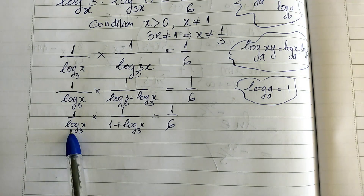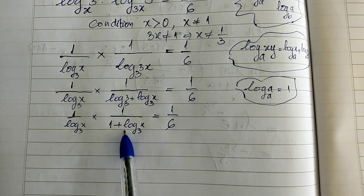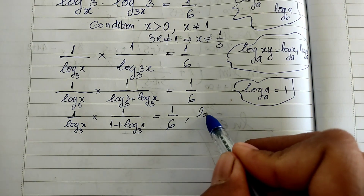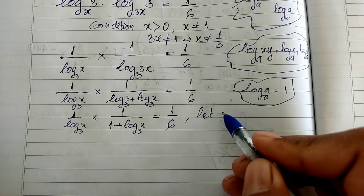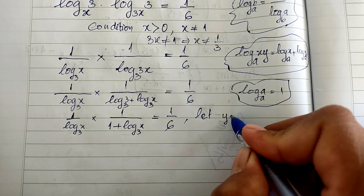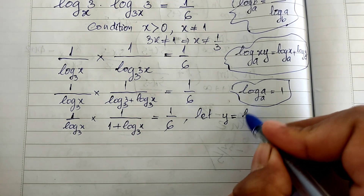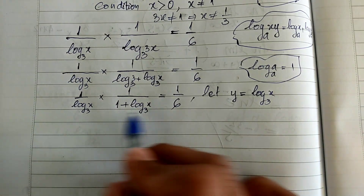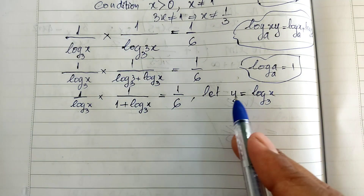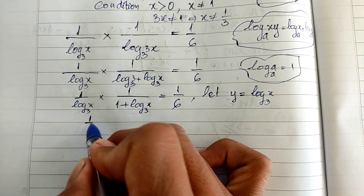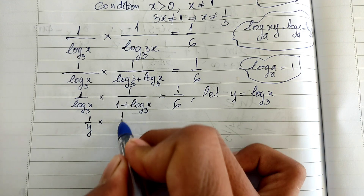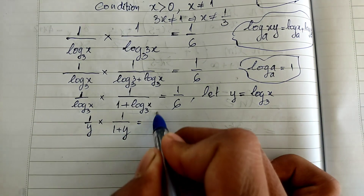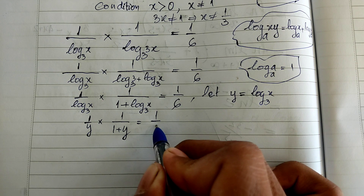Looking at our equation, we can see log base 3 of h appears in both places. So now I let y equal log base 3 of h. With this substitution, we get the new equation: 1 divided by y, multiplied by 1 divided by 1 plus y, is equal to 1 divided by 6.